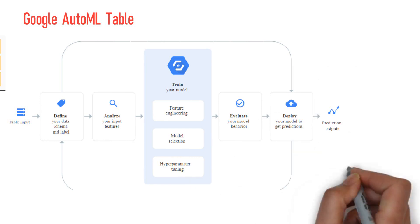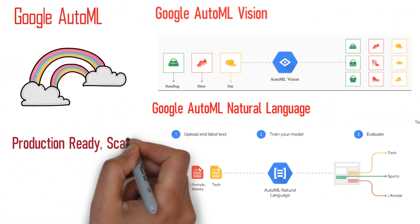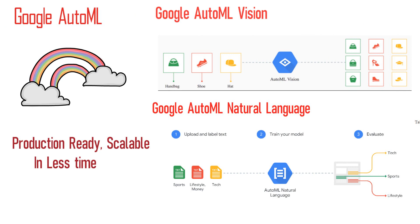Google has also launched AutoML Tables to handle tabular structured data. All these AutoML products will automatically build a production-ready and scalable ML model on your input datasets in a very short span of time.